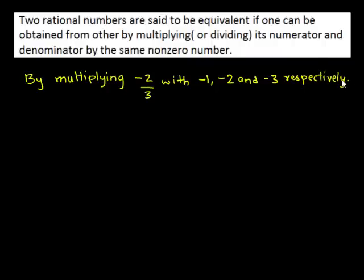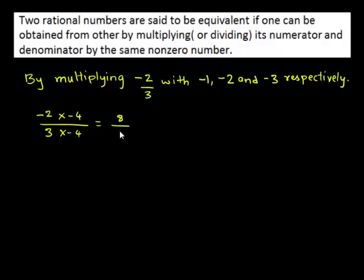In this problem, we have to find the next 4 rational numbers. Therefore, the 5th term can be obtained by multiplying negative 2 upon 3 with negative 4. This gives negative 2 times negative 4 is 8, upon 3 times negative 4 is negative 12.